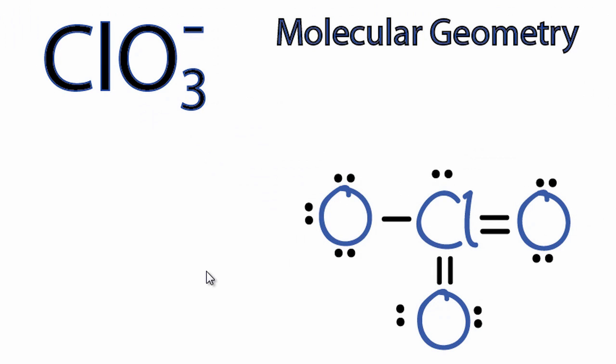Here we have the chlorate ion, ClO3-, and we want to find the molecular geometry. So we have a Lewis structure, and that's going to help us look at the two-dimensional structure, but it's not going to tell us the three-dimensional structure.